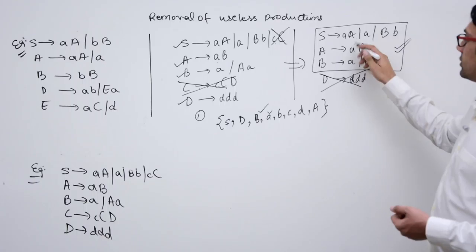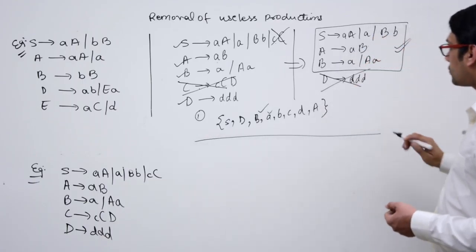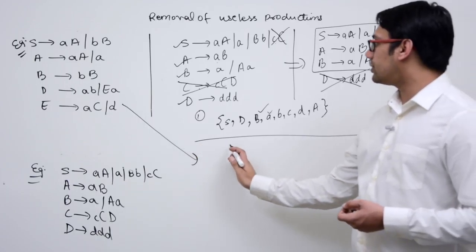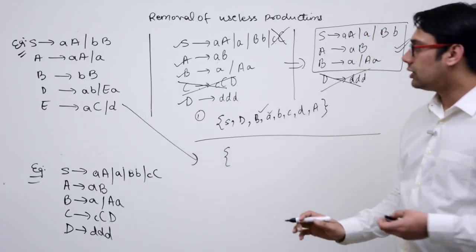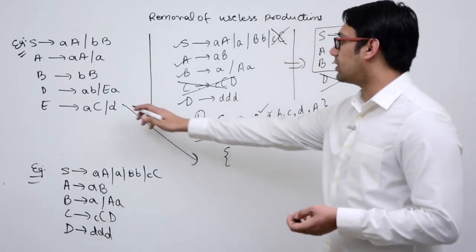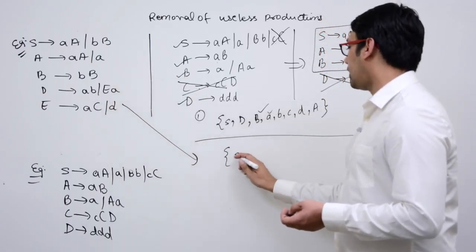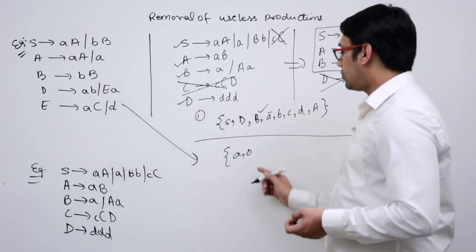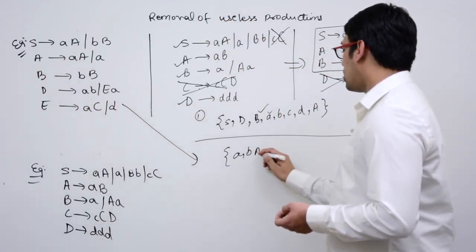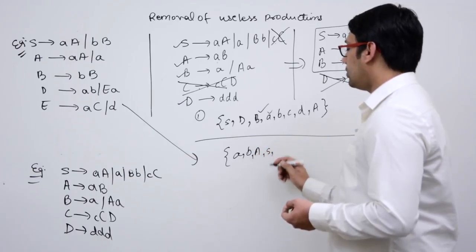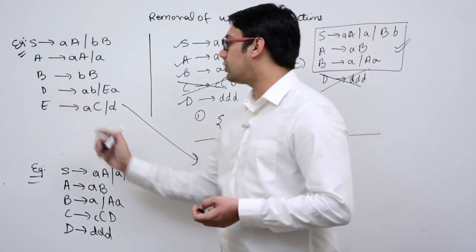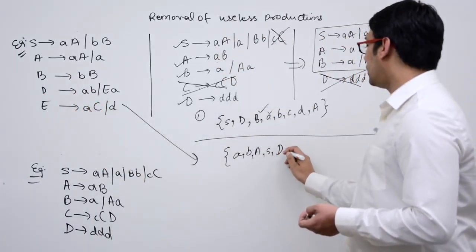Now take the second example. All terminals are always useful — here we have terminal small a and small b. A is directly generating small a, so A is useful. The start symbol is always useful. D is generating ab, so D is also useful.